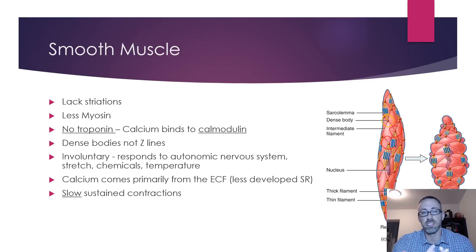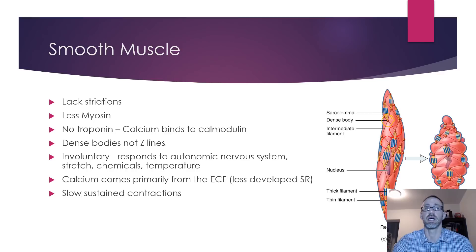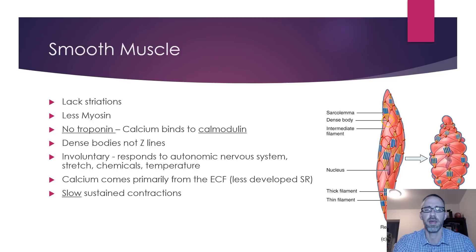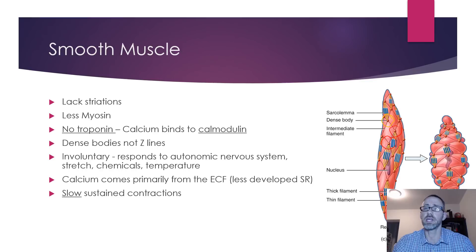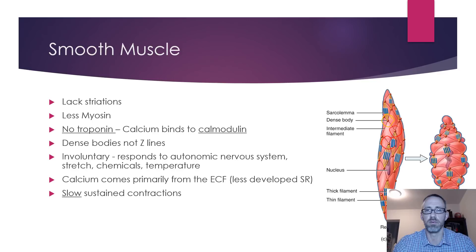Smooth muscle is involuntary. In terms of responsiveness, it can be regulated by many more things than skeletal muscle. In skeletal muscle, a somatic motor neuron innervates a single muscle cell, releases acetylcholine, and the only response is excitation and contraction — it only responds to that neuron, not to any other chemical mediators or stretch.